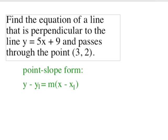Now, in this case, we're being asked to find a line that's perpendicular, so that m, that slope here, is going to be the negative reciprocal of the slope of our given line. So if the slope is 5, the negative reciprocal of 5 is going to be negative 1 fifth.